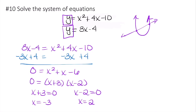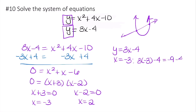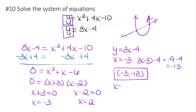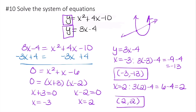For a system of equations, solutions are points, so plug each x value back into the linear equation. For x equals negative 3: 3 times negative 3 minus 4 equals negative 9 minus 4 equals negative 13, giving the point (negative 3, negative 13). For x equals 2: 3 times 2 minus 4 equals 6 minus 4 equals 2, giving the point (2, 2). Those are the two solutions to this system.